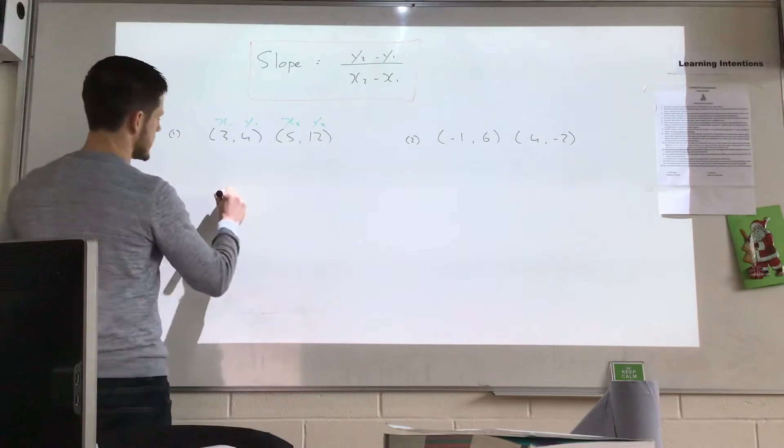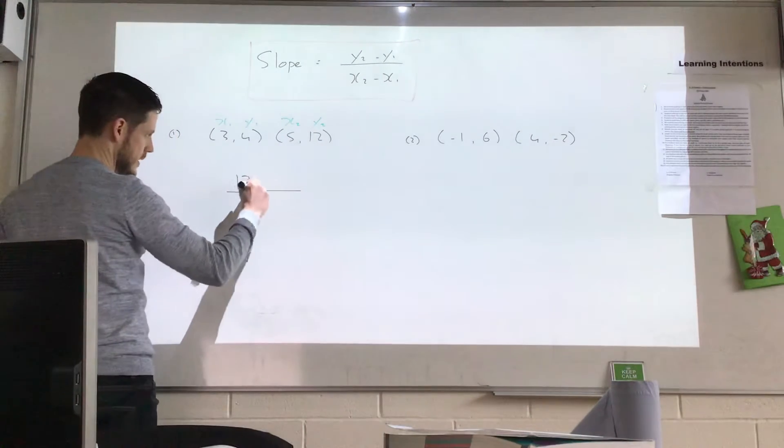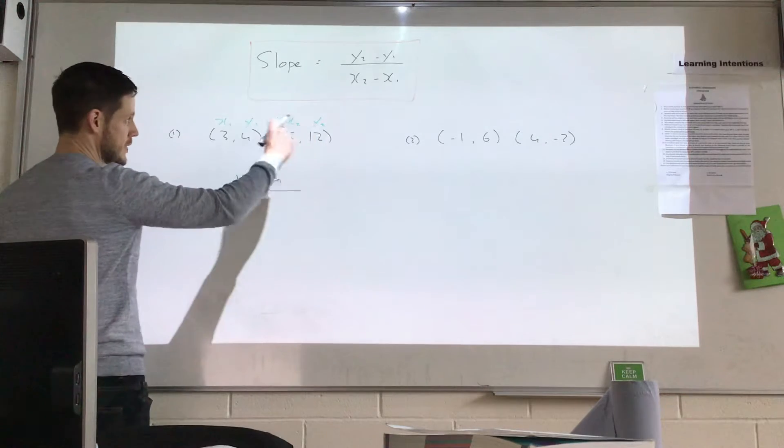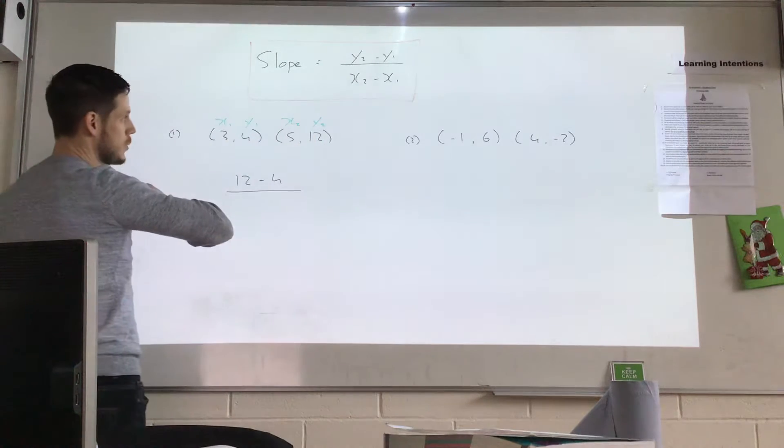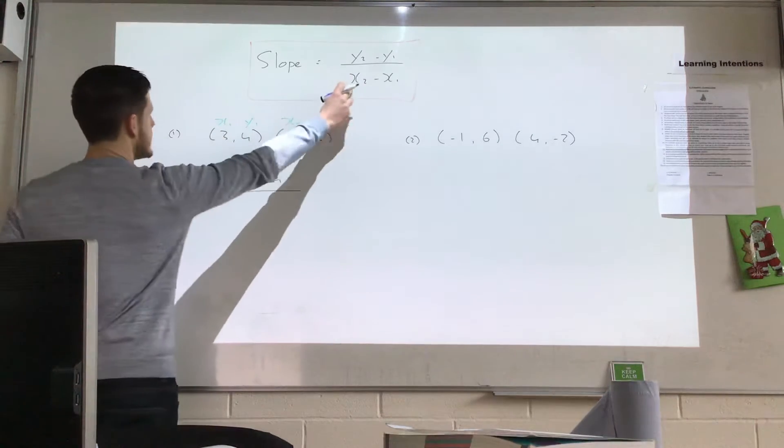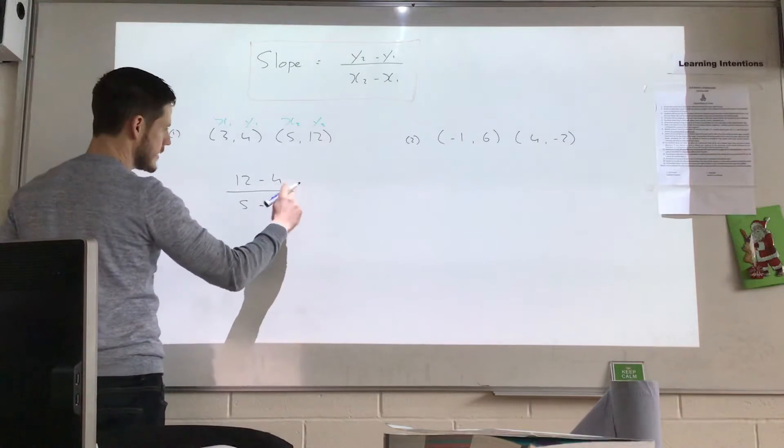So if you look at the formula, it says y2 minus y1. So y2 is 12, we're going to take away y1, which is 4. So I'll do 12, y2 minus y1, which is 4. And then I do x2 minus x1. So you do x2 minus x1. So I start off with 5 and I take away 3.